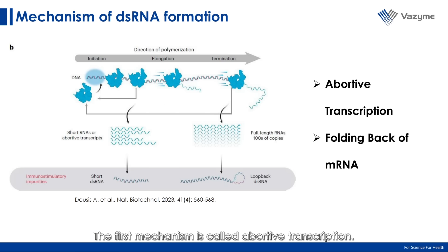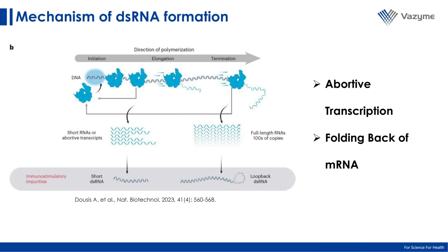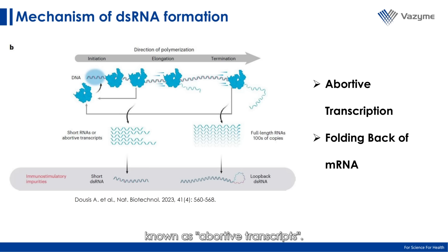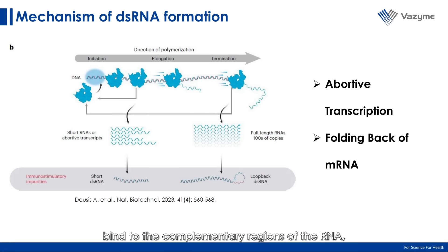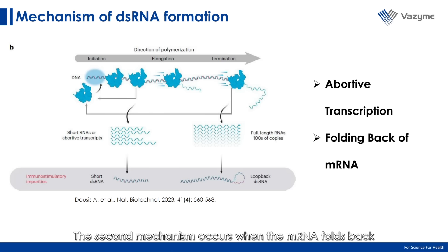The first mechanism is called abortive transcription. Early in the transcription process, T7 RNA polymerase can generate short RNA fragments known as abortive transcripts. These fragments may mistakenly bind to the complementary region of the RNA, resulting in the production of short dsRNA segments.